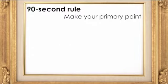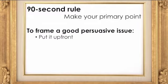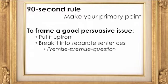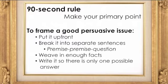Every brief should make its primary point within 90 seconds, but only about 1% of briefs actually do this. Briefs that do succeed allow the judge to understand the basic question, answer, and reasons for that answer within 90 seconds. To frame a good persuasive issue, you must put it up front, break it into separate sentences following a premise-premise-question form, and weave in enough facts so the reader can truly understand the problem, writing it in such a way that there is only one possible answer.